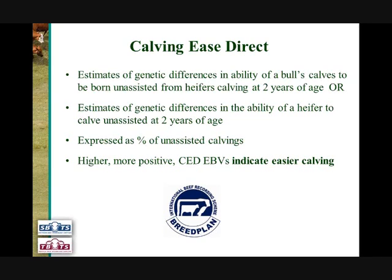The Calving Ease Direct EBVs are expressed as differences in the percentage of unassisted calvings. In this manner, higher or positive Calving Ease Direct EBVs indicate more ease of calving. So when looking to select an animal — either a sire for use over heifers or a heifer herself to calve down at two years of age — where calving ease is important within the breeding objective, higher Calving Ease Direct EBVs would generally be more beneficial.